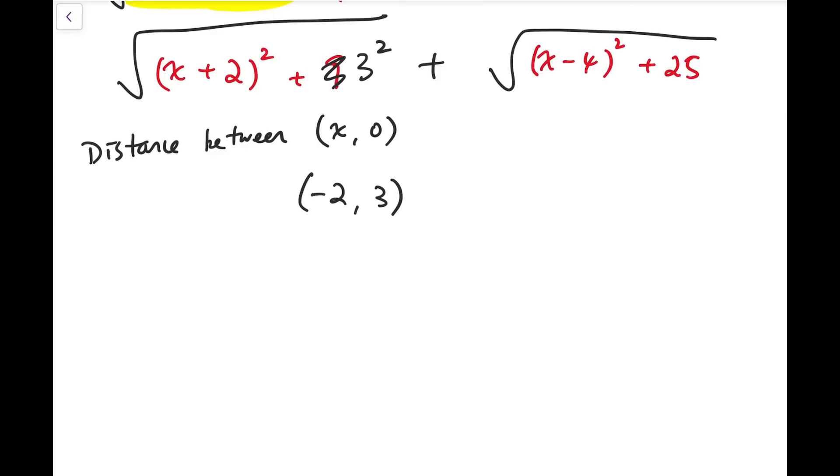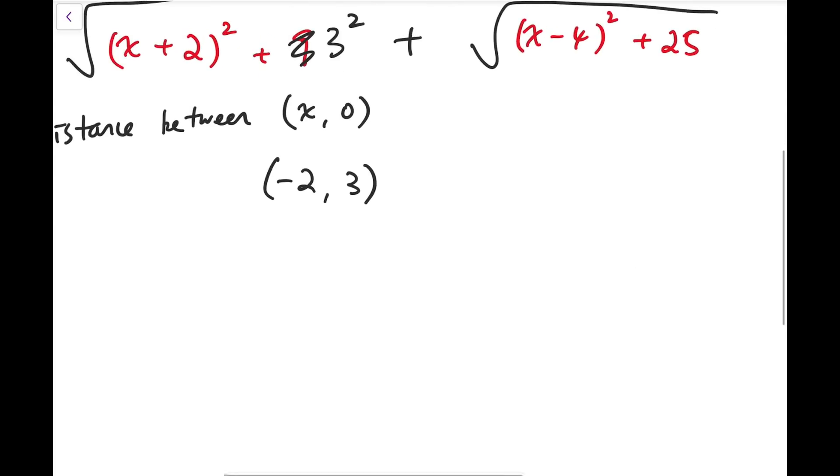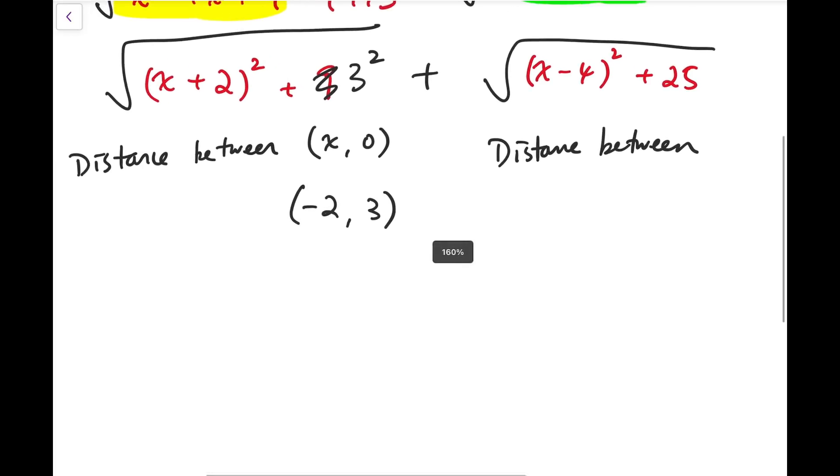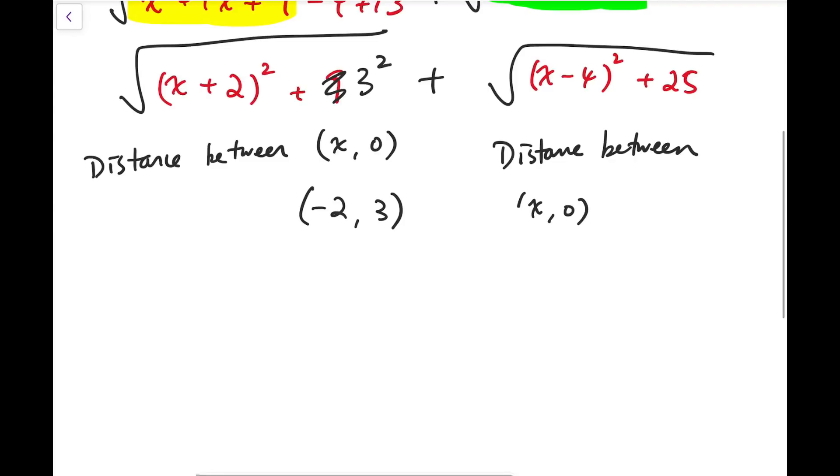And similarly, I can do this on the second square root as well. That would be the distance between x 0 again, because again we have x minus 4 all squared, and then we have 5 squared. We do not say distance between x, y, and some coordinates because we do not have y in this expression, only x. So for the y coordinate part, I'm going to set this to be 0.